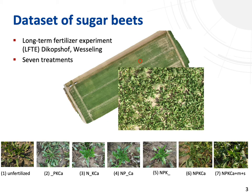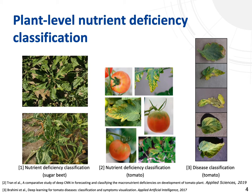We collected these RGB images with a smartphone camera and a sugar beet field with nutrient deficiency plots, and here are some examples from the dataset. We annotated the images with seven labels, as listed here. As you can see, we focus on the plant-level images.